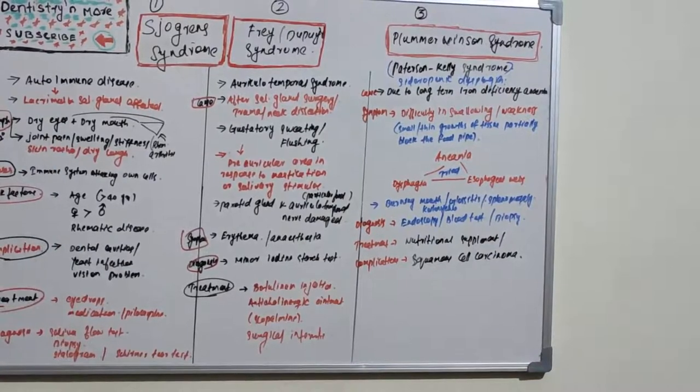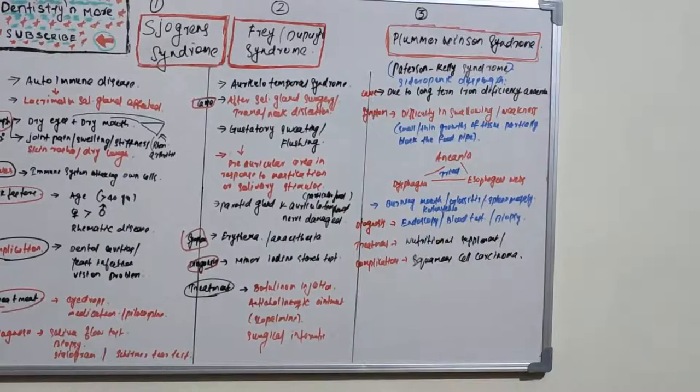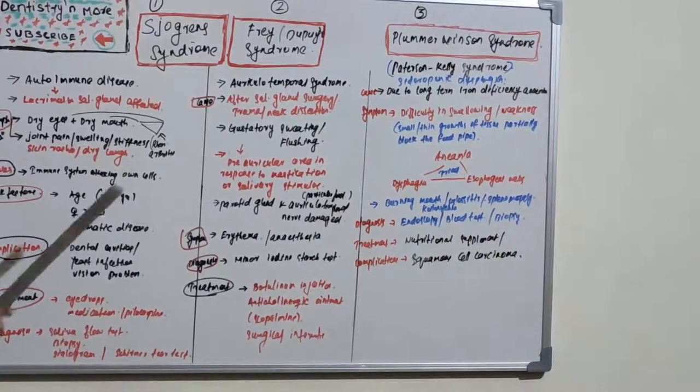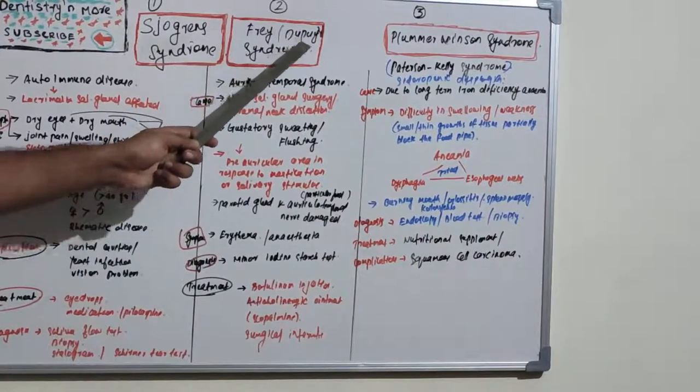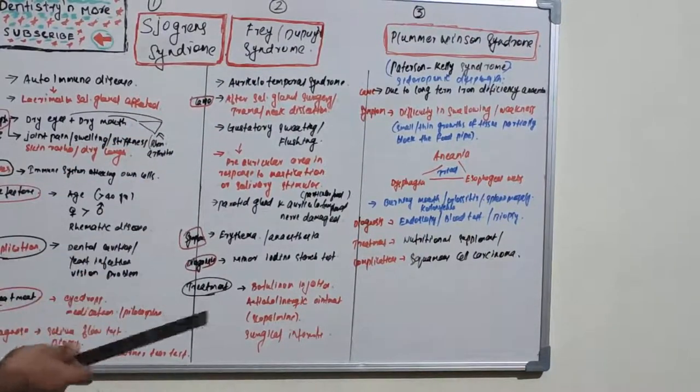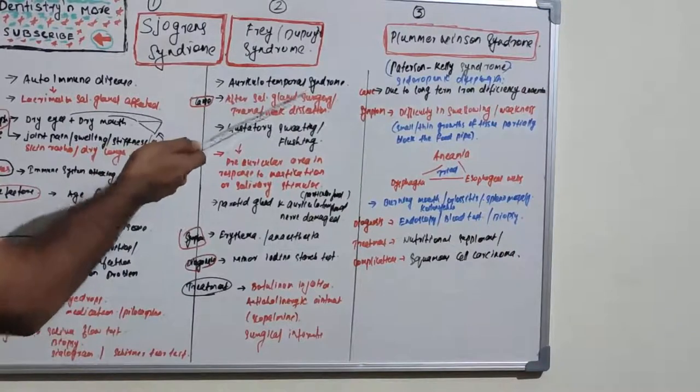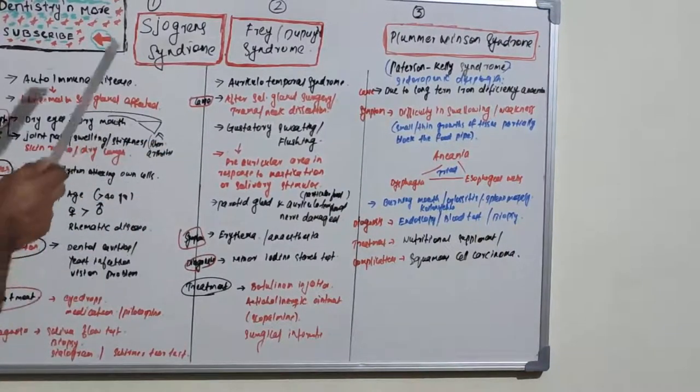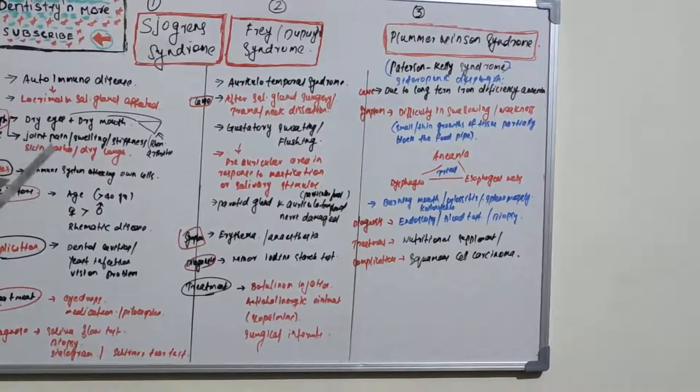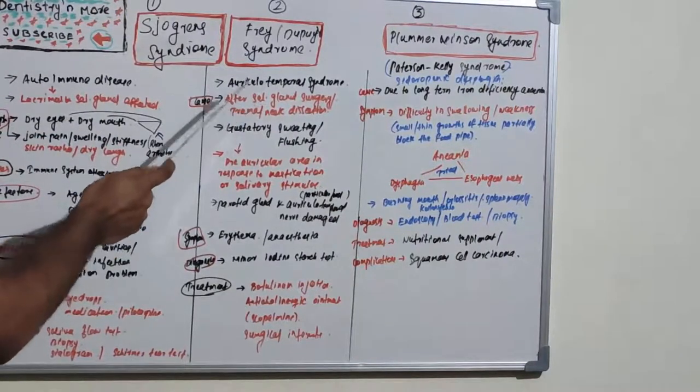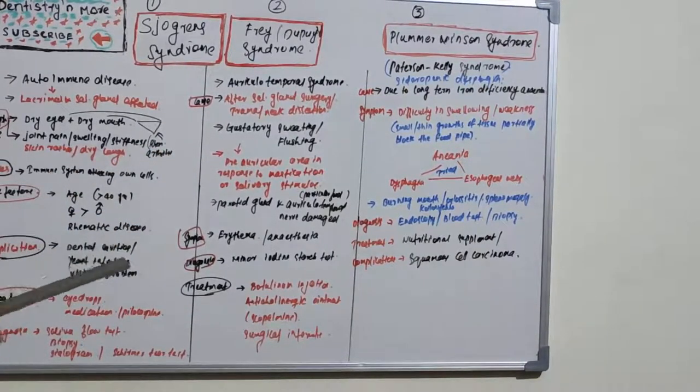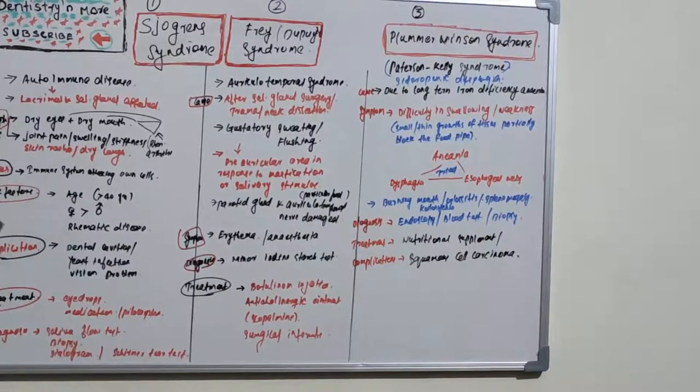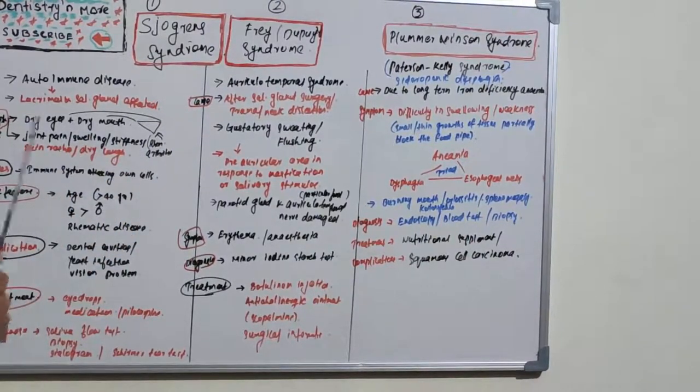Now let's move on to the second syndrome, Frey syndrome. Frey syndrome is also known as auriculotemporal syndrome, or another name is Dupuy syndrome. Here also it is affecting salivary gland, but it is not an autoimmune disease. The salivary gland is affected due to surgery, trauma, or neck dissection, where the salivary gland and auriculotemporal nerve are affected.